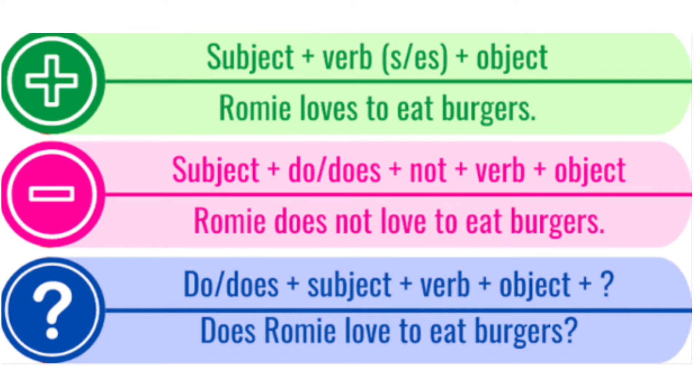For positive sentences, the structure is: subject plus verb (with 's' or 'es') plus object. Example: Romy loves to eat burgers. For negative sentences: subject plus do or does plus not plus verb plus object. Example: Romy does not love to eat burgers.